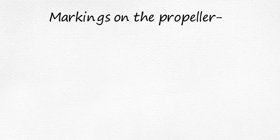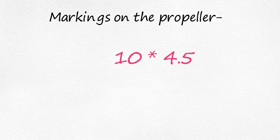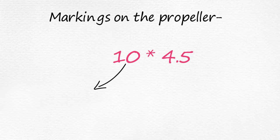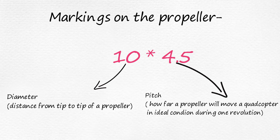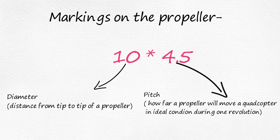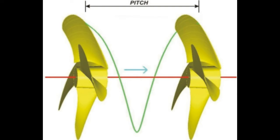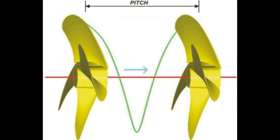Now let's see what the numbers on propellers denote. In my case it is 10×4.5, which means the propeller has a diameter of 10 inches and a pitch of 4.5. Diameter means the distance from tip to tip of the propeller, and pitch means how far the propeller will move the quadcopter in ideal conditions during one revolution. In my case, a pitch of 4.5 means it will move the quadcopter 4.5 inches forward for every revolution.